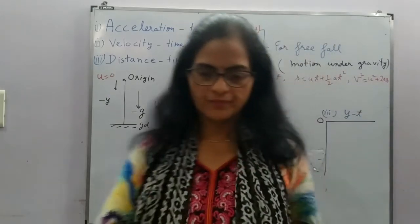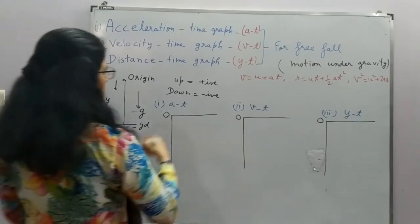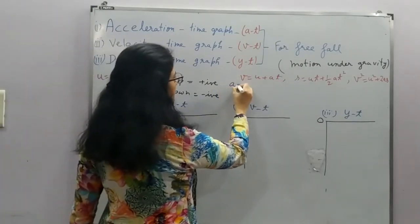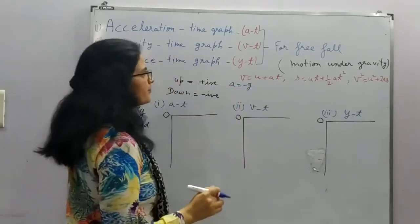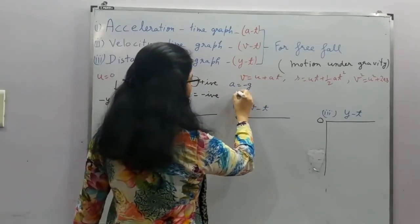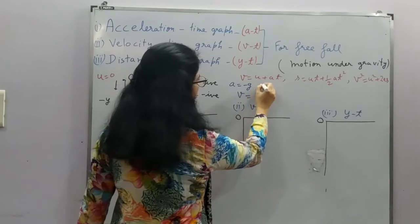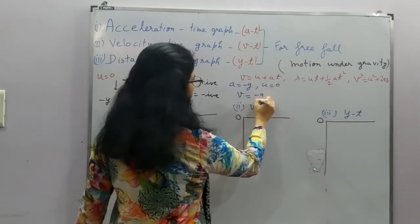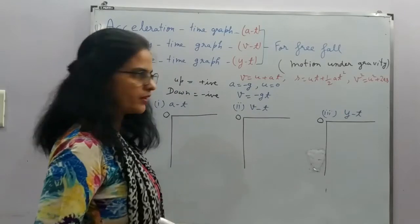Now here, acceleration is how much? Minus g. And here, we can take this V, and U is 0 over here, so I can write it minus gT.